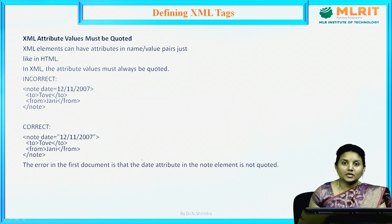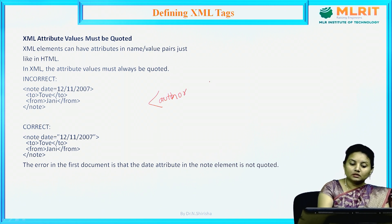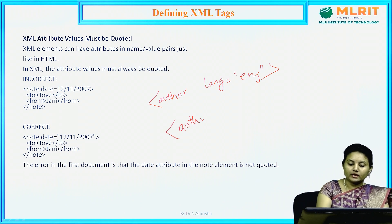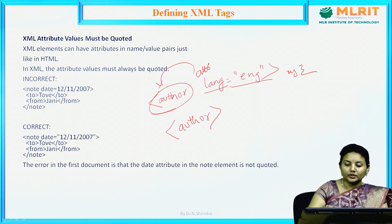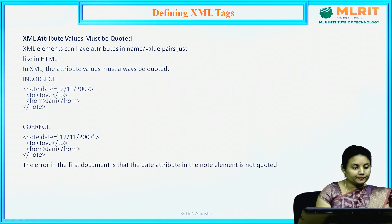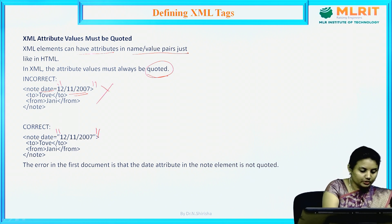XML attribute values must be quoted. For example, if you have an author element with a language attribute, the value like 'ENG' must be given in quotation marks. XML elements can have attributes in name-value pairs and the values must be quoted. If you write a date attribute value without quotes, that is wrong — the value must always be quoted.